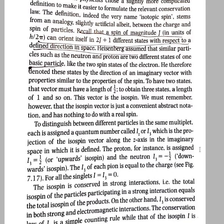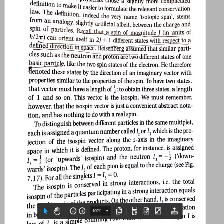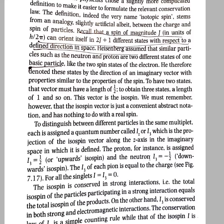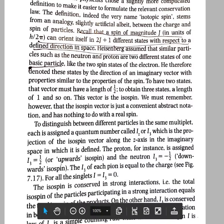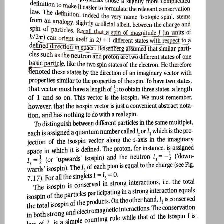The proton is assigned an I3 value of +1/2 and the neutron has I3 = −1/2. We assign the maximum positive I3 value to the particle in a multiplet that has the maximum charge. In the proton-neutron multiplet, the proton has the highest charge (+1) and the neutron has charge 0, so we assign +1/2 to the proton and −1/2 to the neutron.